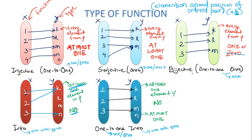The next type is the bijective function, which is both one-to-one and onto. One-to-one requires each element to receive zero or one incoming arrow; onto requires each element to receive one or more. Combining both conditions means each and every element on the second set receives exactly one incoming arrow. Such a function is called bijective.